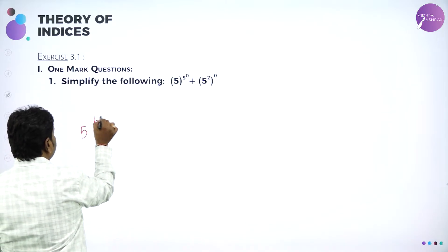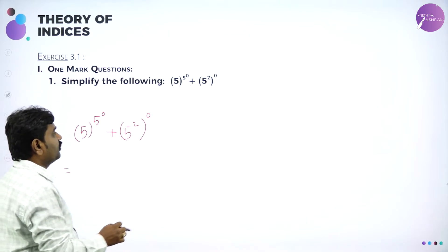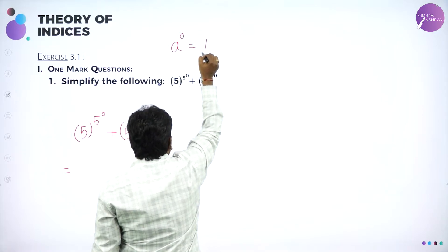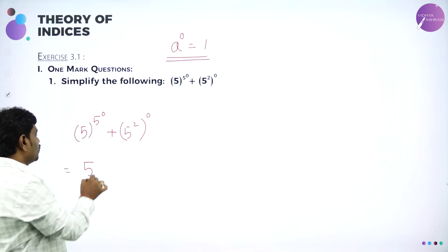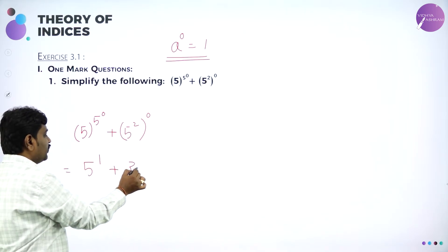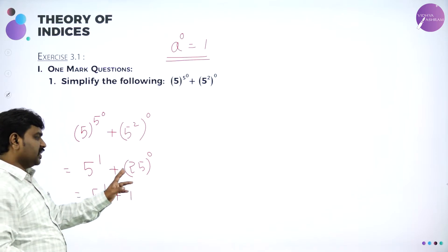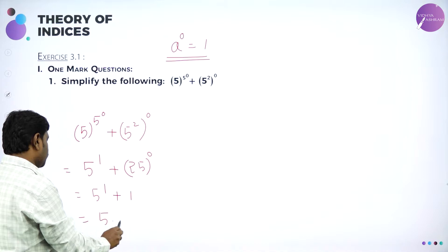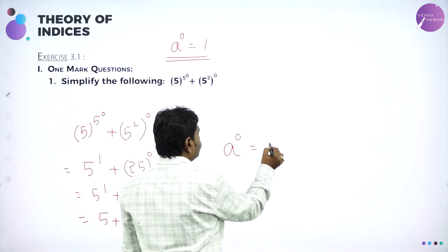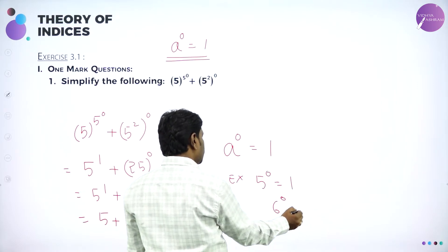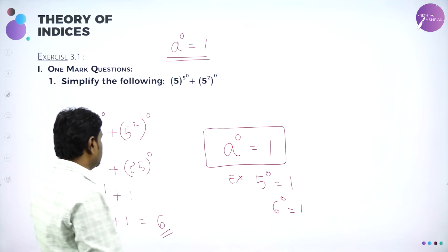The first question is: 5 power 5 power 0 plus 5 square power 0. If you know anything power 0, we have a very important law of indices: anything power 0 is 1, so a power 0 is 1. In the numerator, 5 power 0 is 1, plus 5 square is 25, and 25 power 0 is again 1. So we have 5 power 1 is 5, plus 1, and the answer is 6. Here we are using the formula a power 0 equals 1.